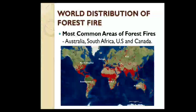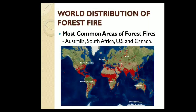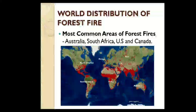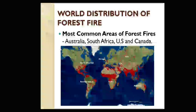We will now look into the world distribution of forest fire. As you can see in the map, the most common areas of forest fires are Australia, South Africa, US and Canada.